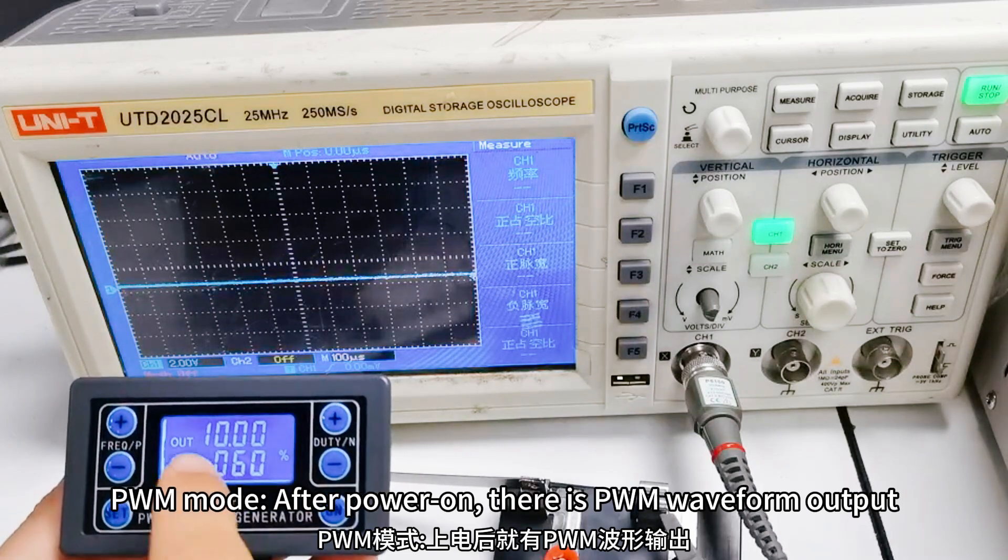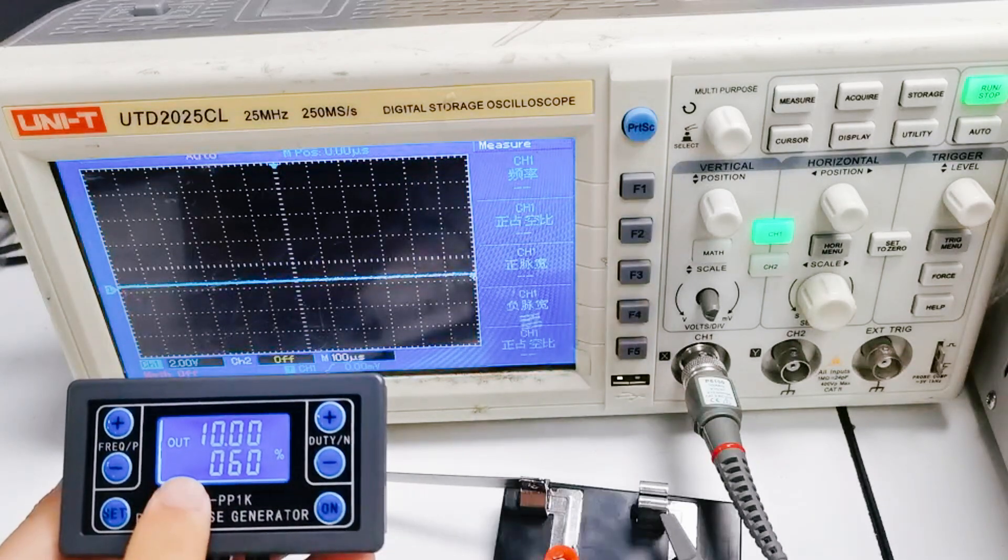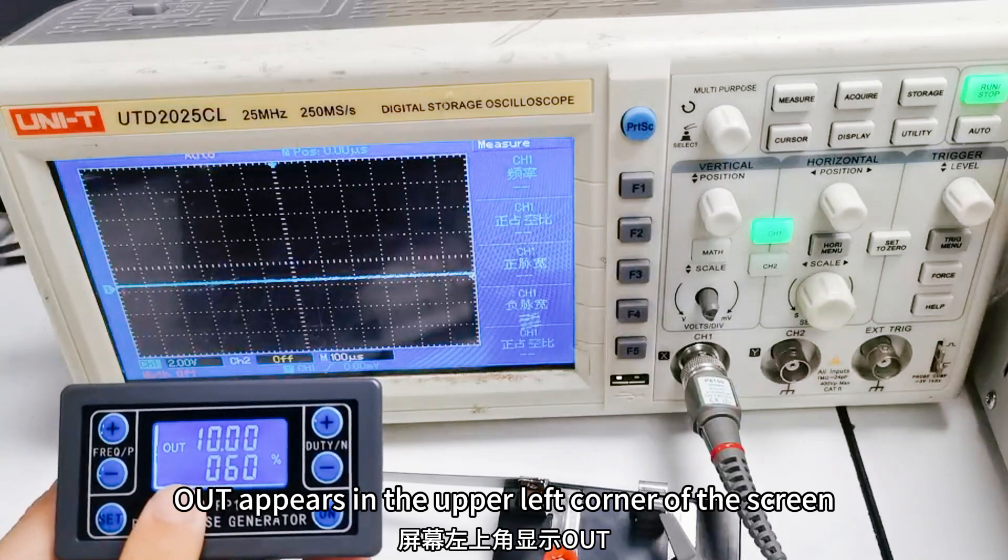PWM mode: after power on, there is PWM waveform output. Out appears in the upper left corner of the screen.